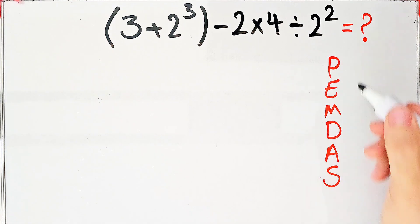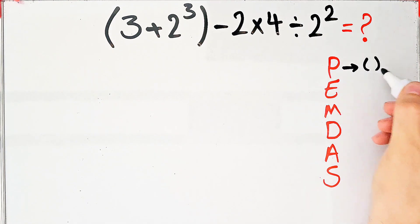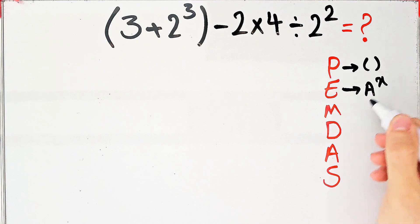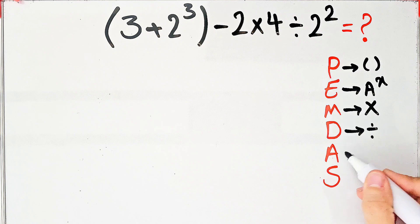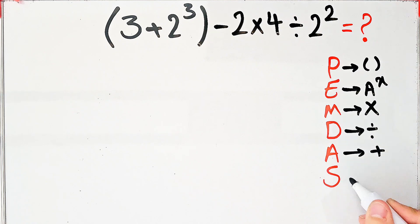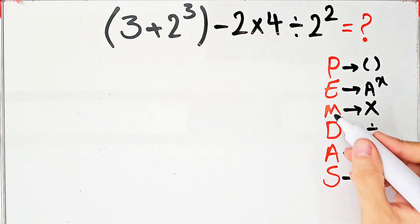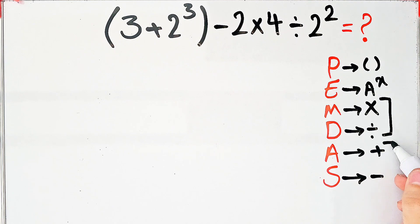In this rule, P stands for parentheses, E stands for exponent, M stands for multiplication, D stands for division, A stands for addition, and S stands for subtraction. Multiplication and division have the same level of priority. Also, addition and subtraction have the same level of priority.